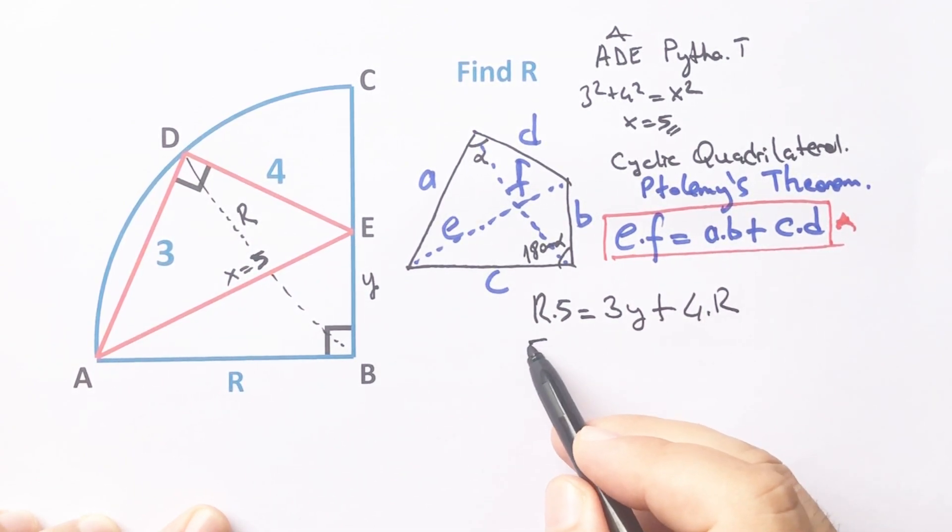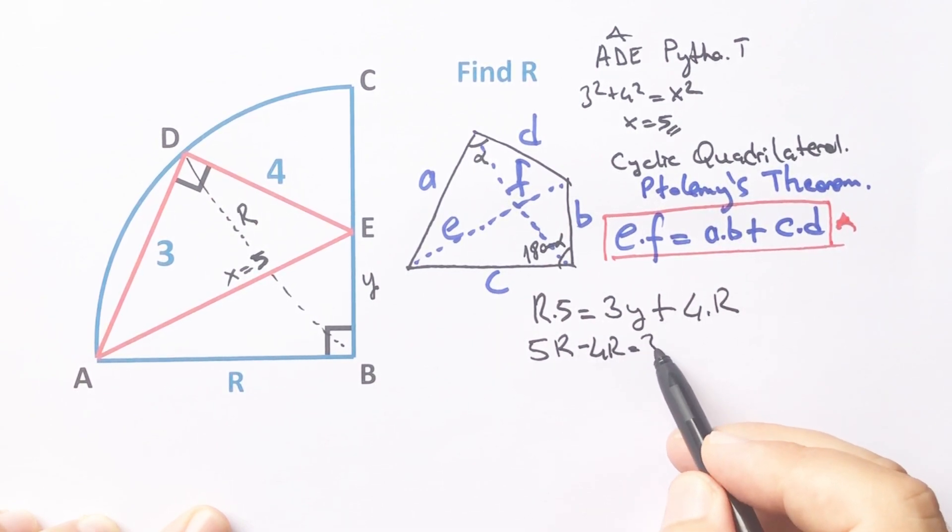So 5R minus 4R equals 3y. Therefore, R equals 3y.